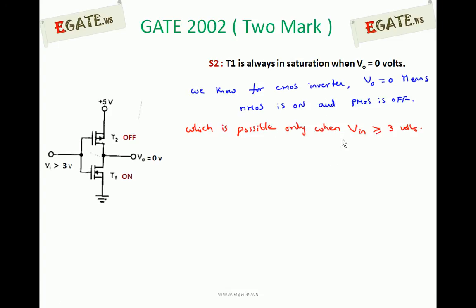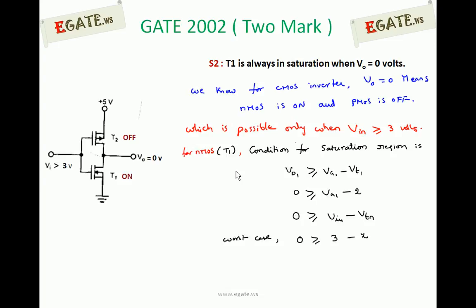V0 equals 0 implies NMOS is in the ON condition and PMOS is in the OFF condition, which is only possible when V input is greater than or equal to 3 volts. If the input voltage is greater than 3 volts, T1 is ON and T2 is OFF. If you apply between 2 and 3 volts, both transistors are ON. Now we will check the saturation condition for NMOS transistor T1.